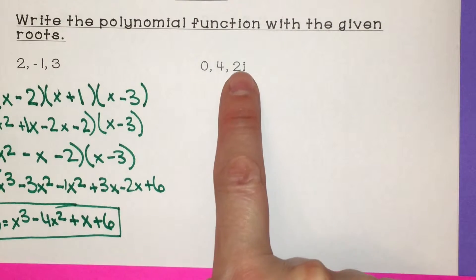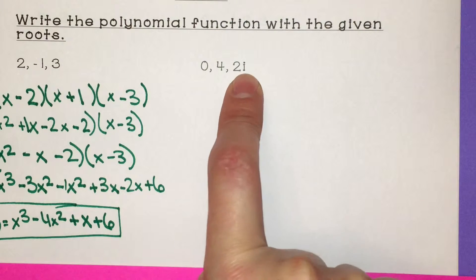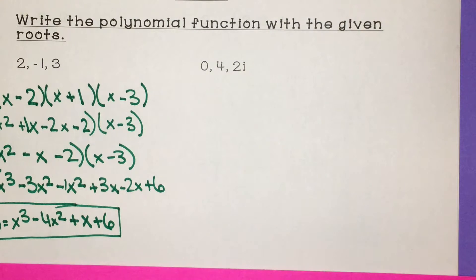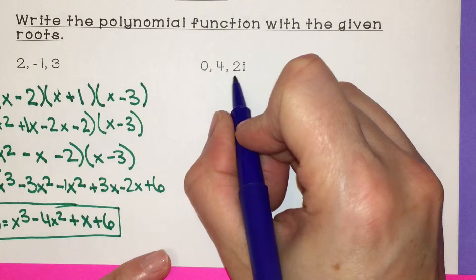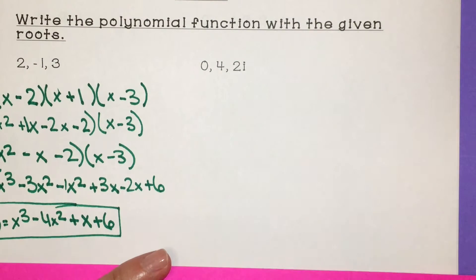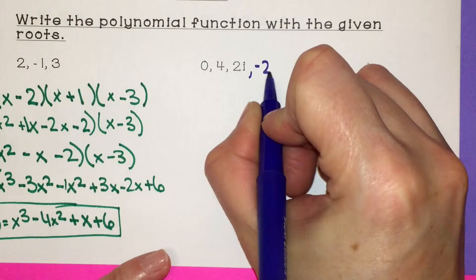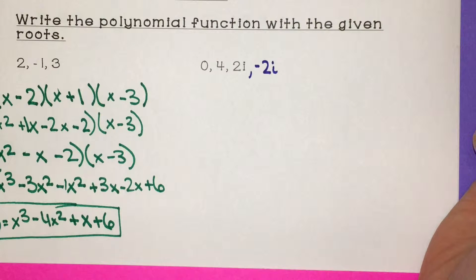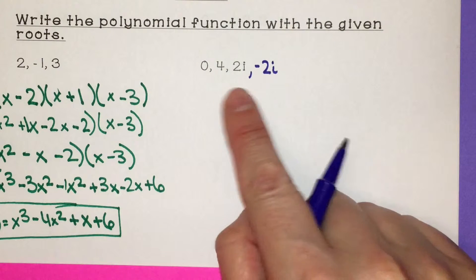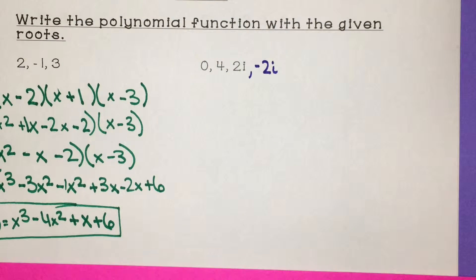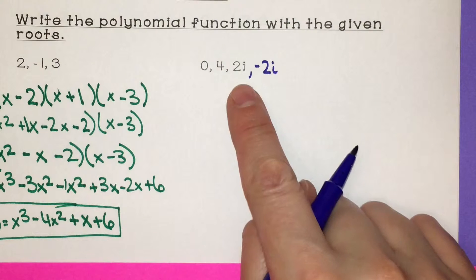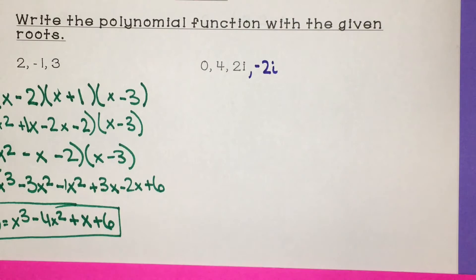This next one is slightly different — we have an imaginary number, 2i. Anytime you have an imaginary number, if you have positive 2i, you always know its conjugate negative 2i is also a root. You always have to identify that other root when you have an imaginary number.